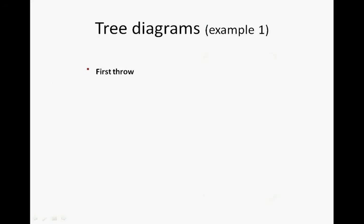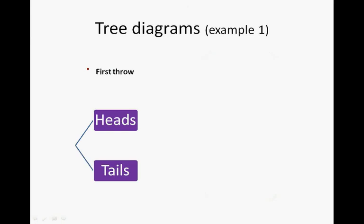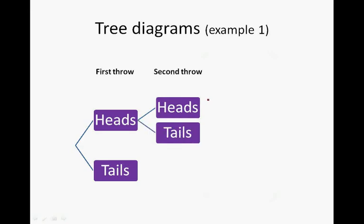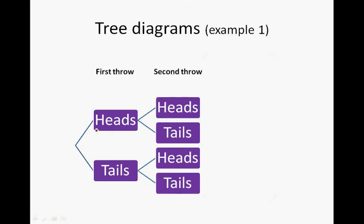There will be a first throw, which will either be heads or tails — those are the only two options when flipping a coin. In the second throw, after throwing heads, we can either throw heads or tails. After getting a tail, we can either get heads or tails. This is the complete tree diagram for flipping a coin twice.